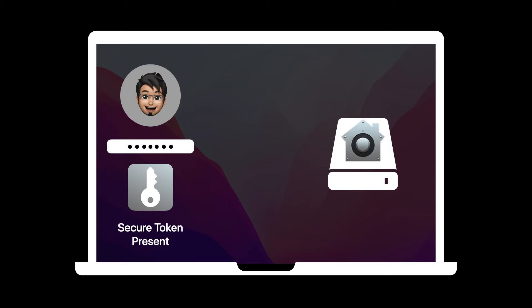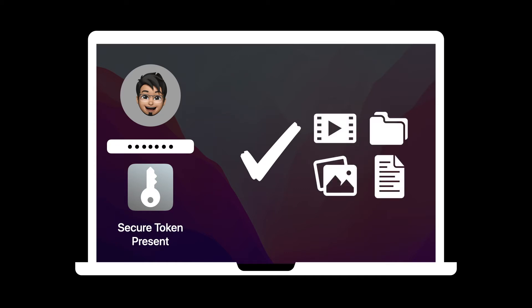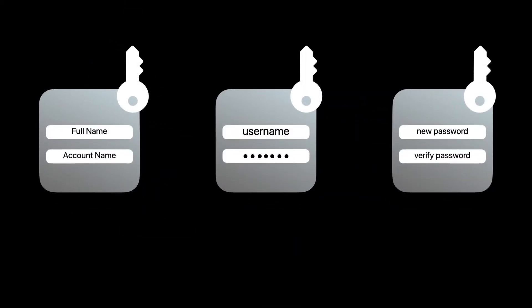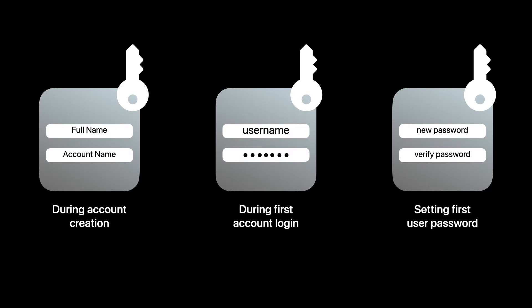The secure token is a user attribute that allows local computer accounts the ability to unlock a FileVault protected system, making Mac an even more secure computer. A secure token can be granted during the following scenarios: during account creation, during the first account login, or when setting the first user password.